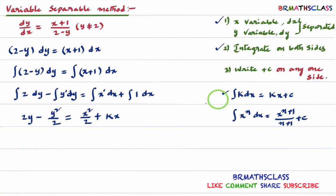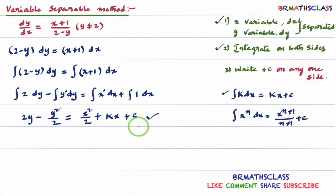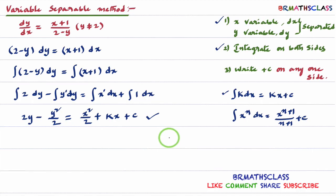As discussed in the third step, write +c on one side only — always on the right-hand side. So the general solution is: 2y − y²/2 = x²/2 + x + c. I do not recommend simplifying further to match a textbook answer, because placing +c on different sides leads to answers that look different but are actually the same. This is the required general solution of the given differential equation.